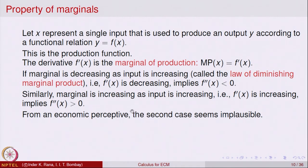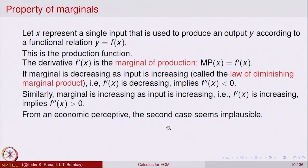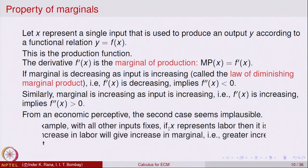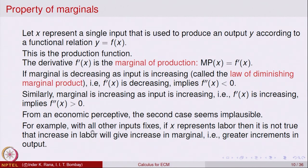The second scenario in economics — where the marginal is increasing as output increases — does not seem to be a plausible situation. For example, if all other inputs are fixed and x represents labour, it is not true that an increase in labour will always give greater increments in output. That is why this scenario may not always happen.